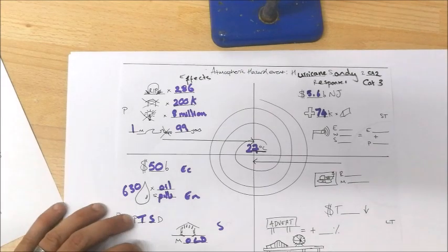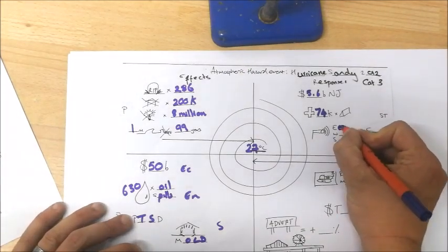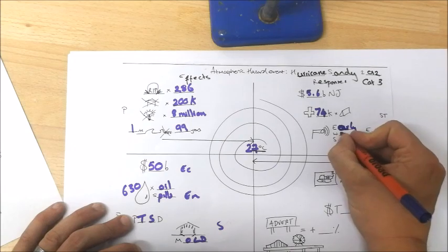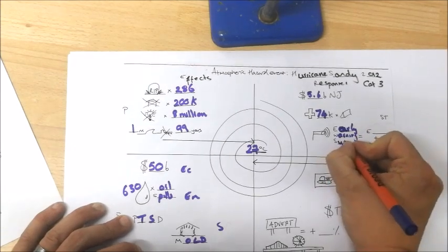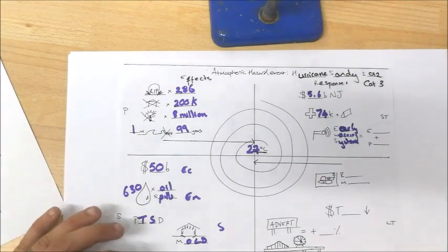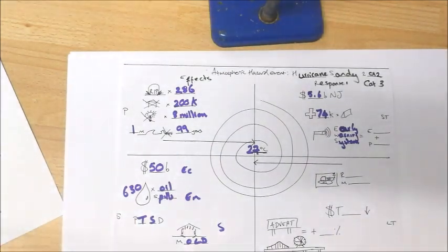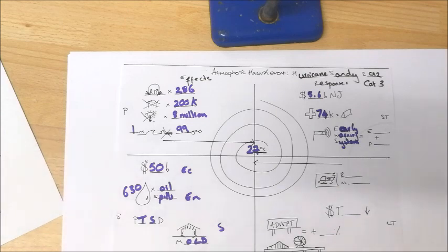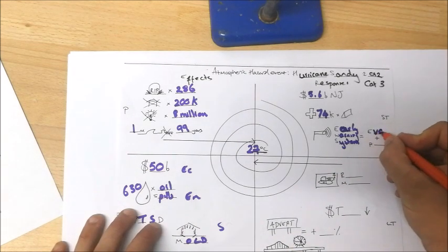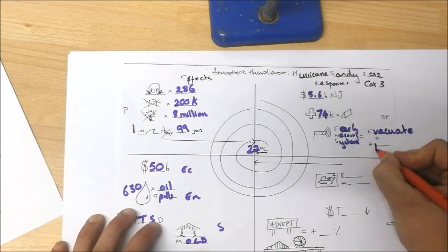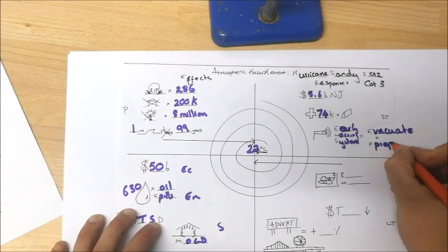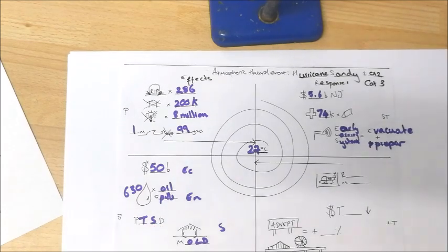We also know that they had an early warning system in place. The early warning system was used in computer models. Basically they used drones and satellites to collect data from the hurricane as it's forming. And then they were able to predict, using those supercomputers, the potential path that it was going to go. So in some cases this isn't always accurate, but when it is, it allows people to get an early warning system out, which then allows them to evacuate and prepare for the storm.